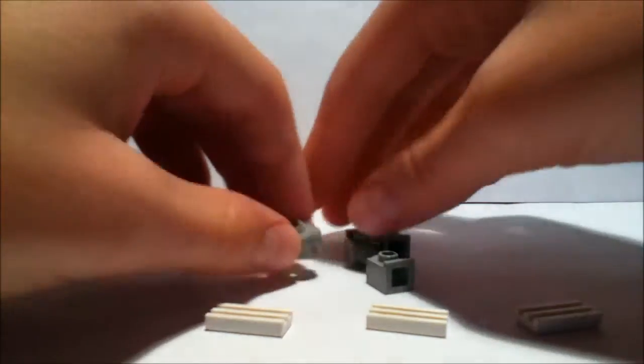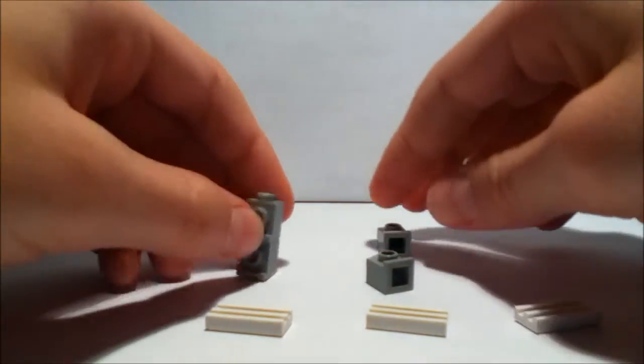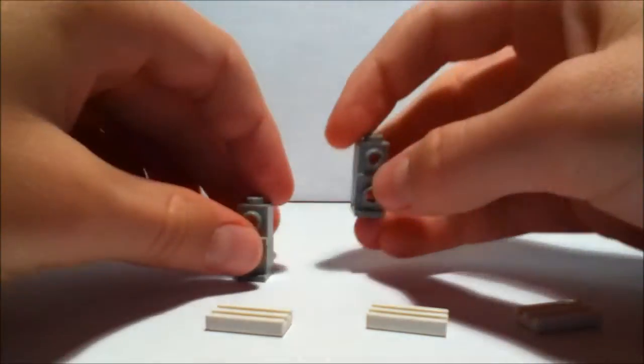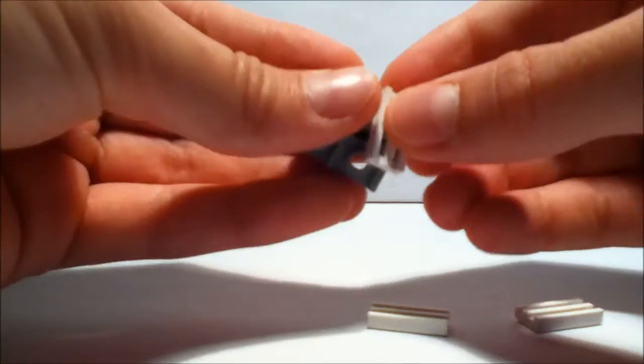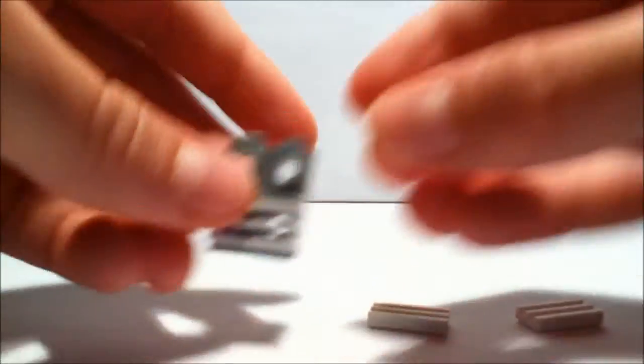So what you're going to do is take your four headlight pieces and stack them on one over each other like this. To have two, now place them side by side. Take a grid piece and place it at the bottom. Like so.